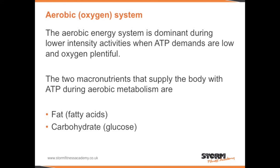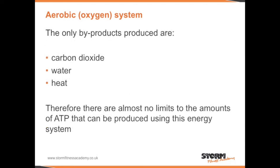The aerobic system. The aerobic energy system is dominant during lower intensity activities, such as walking, jogging, swimming and cycling — this is when ATP demands are low and oxygen is plentiful. The two macronutrients that supply the body with ATP are fat and carbohydrate, and in some extreme circumstances, such as starvation, protein. The only by-products produced by the aerobic system are carbon dioxide, water and heat.